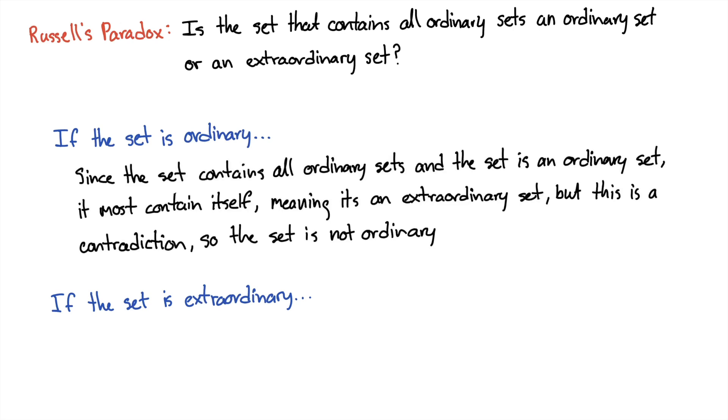So if the set is an ordinary set, since the set contains all ordinary sets, and the set is an ordinary set, it must contain itself, meaning it's actually an extraordinary set. But this is a contradiction, so the set is not ordinary.